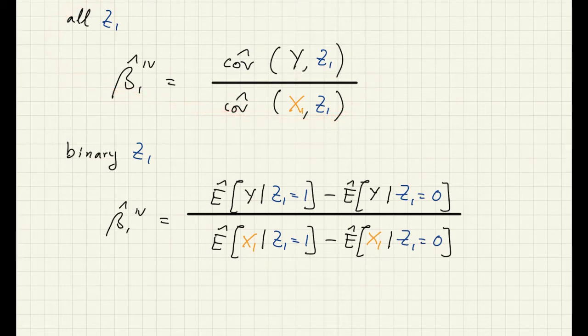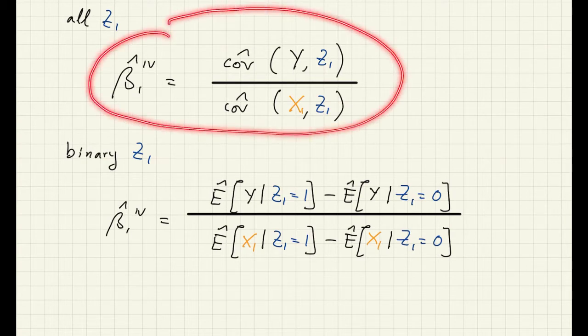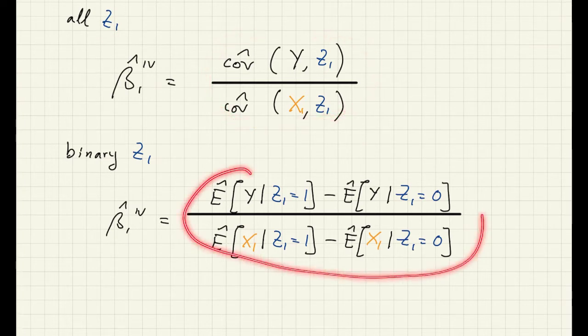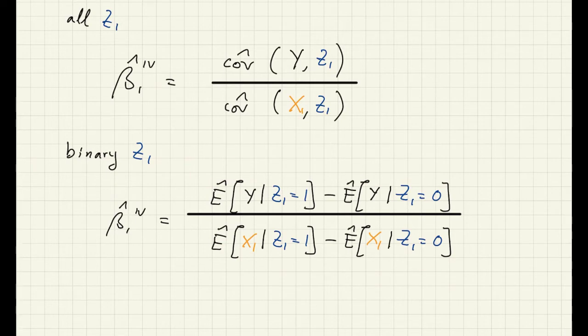And so the question was how do these two go together, and the answer is, if we're starting from here, like this is the IV estimator that we derived, and now we're adding that z_i happens to be binary, that does not invalidate this formula. We did not rule out that it should be binary, but in case it turns out to be binary, then actually this formula can be written like this. It's not a new formula, it's just a different way of writing the formula that we can use in case of a binary instrument.